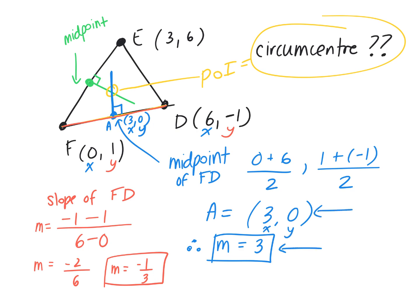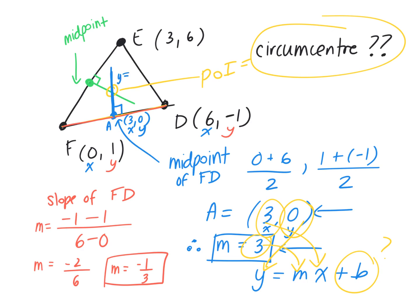We have the slope and we have the point on the line, so we can find the equation. Plug in the slope, plug in x, plug in y, and solve for B. The equation of the blue line is y = 3x − 9.